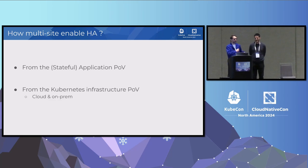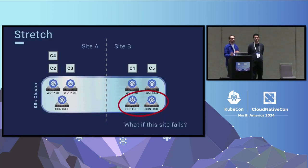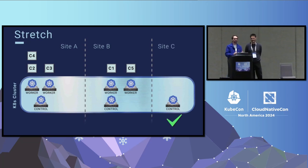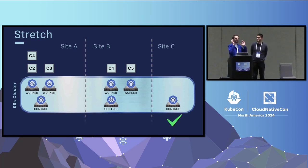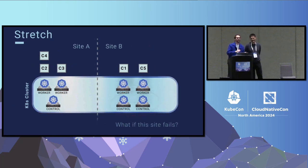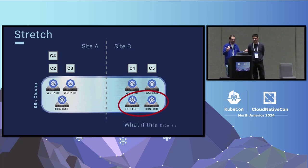Whether on-prem or in the cloud, what do we mean by multi-sites? Working with customers on-prem, they tend to have several facilities — site A, site B — with dedicated power, dedicated rooms, dedicated network, cooling, and so on. Having multiple sites enables you to distribute your workload, isolate it, and make it more highly available.